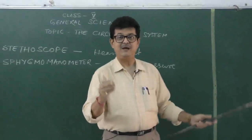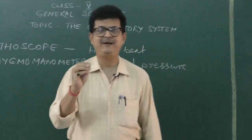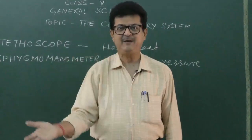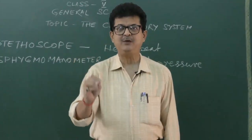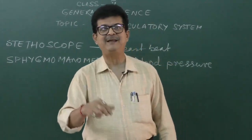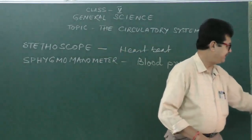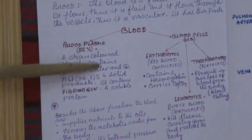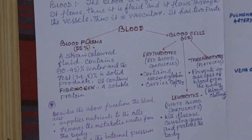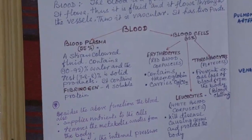The heart, blood vessels, and then the blood. Blood is a red-colored fluid in vertebrates — in invertebrates it is not red. It is red only due to the red blood cells containing hemoglobin. There are two parts of blood: blood plasma, which contributes 55% of the blood, and blood cells, which contribute 45%. This 55% plasma is mostly water — 90 to 92% water — with about 7.8 to 8% dissolved solids.